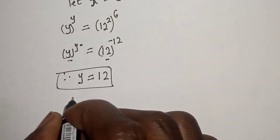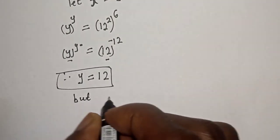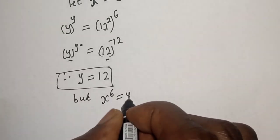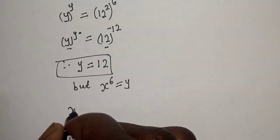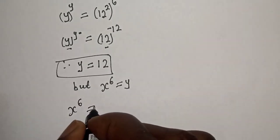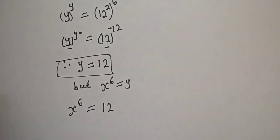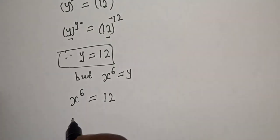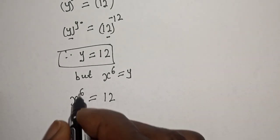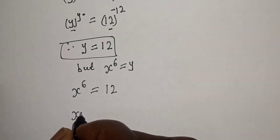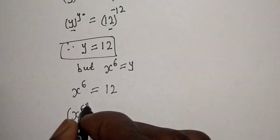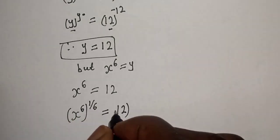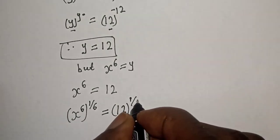But s raised to power 6 is equal to y, so s raised to power 6 is equal to 12. Let's multiply the exponent of both sides by 1 over 6 in order to eradicate the 6. s raised to power 6 to the power of 1 over 6 is equal to 12 to the power of 1 over 6.